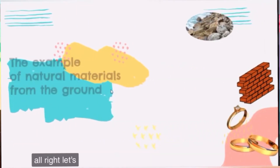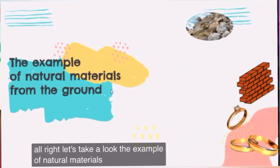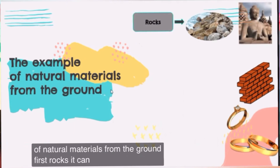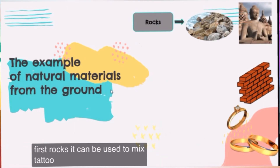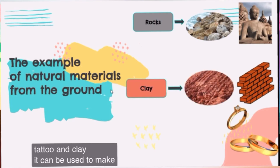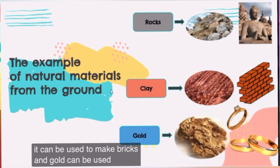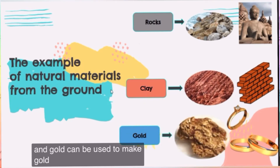Let's take a look at examples of natural materials from the ground. First, rocks — they can be used to make statues. Next, clay — it can be used to make bricks. And gold can be used to make gold rings.